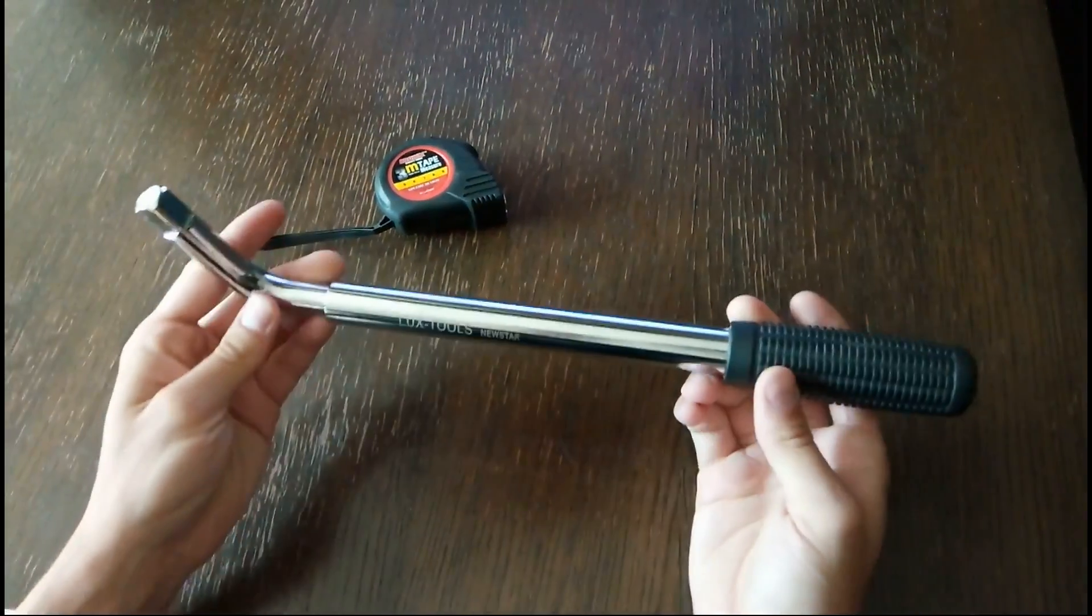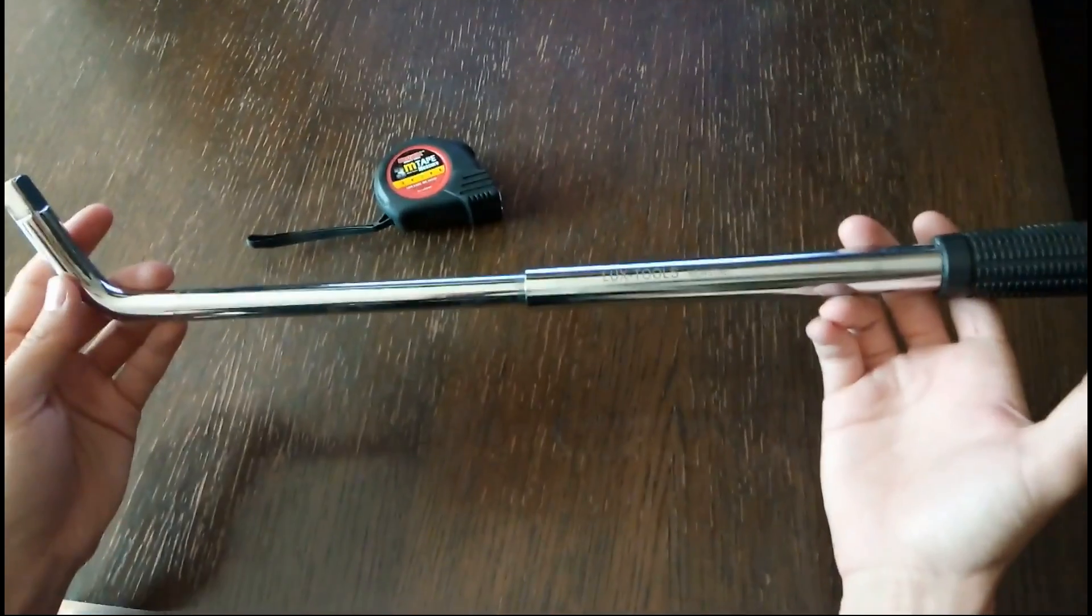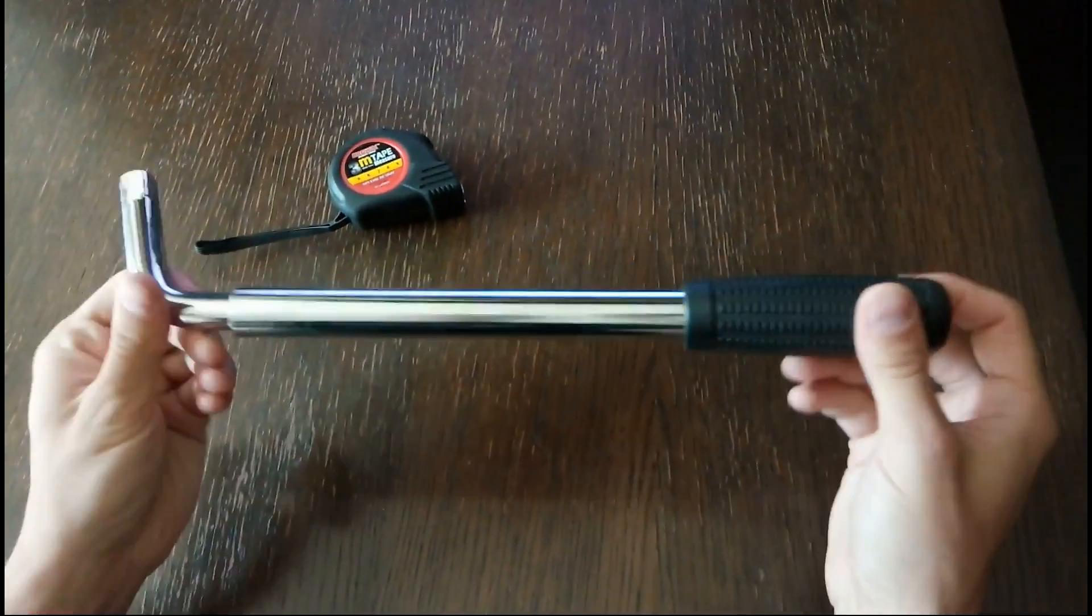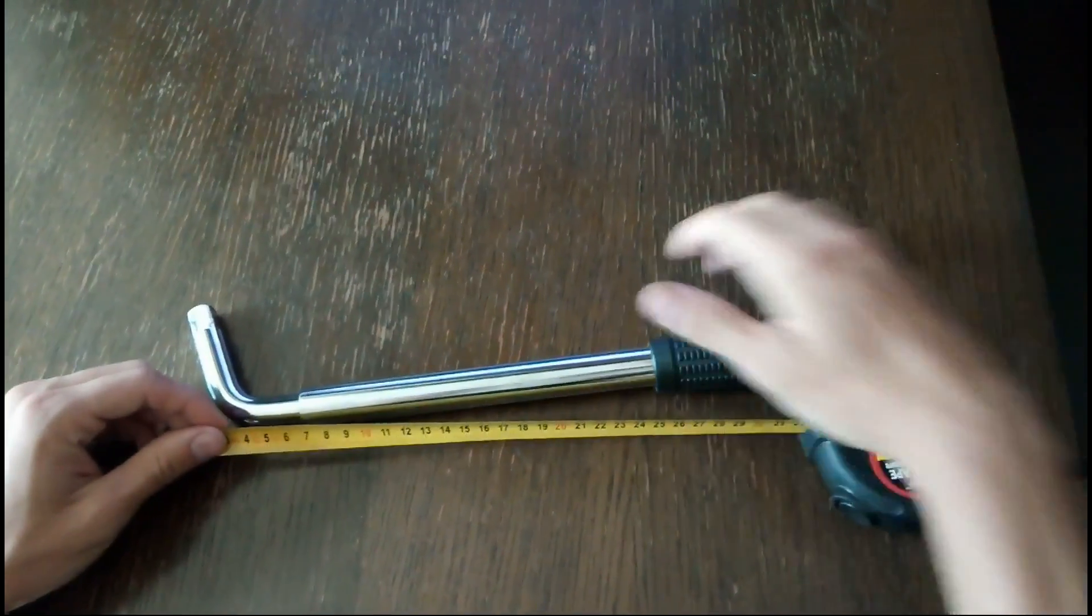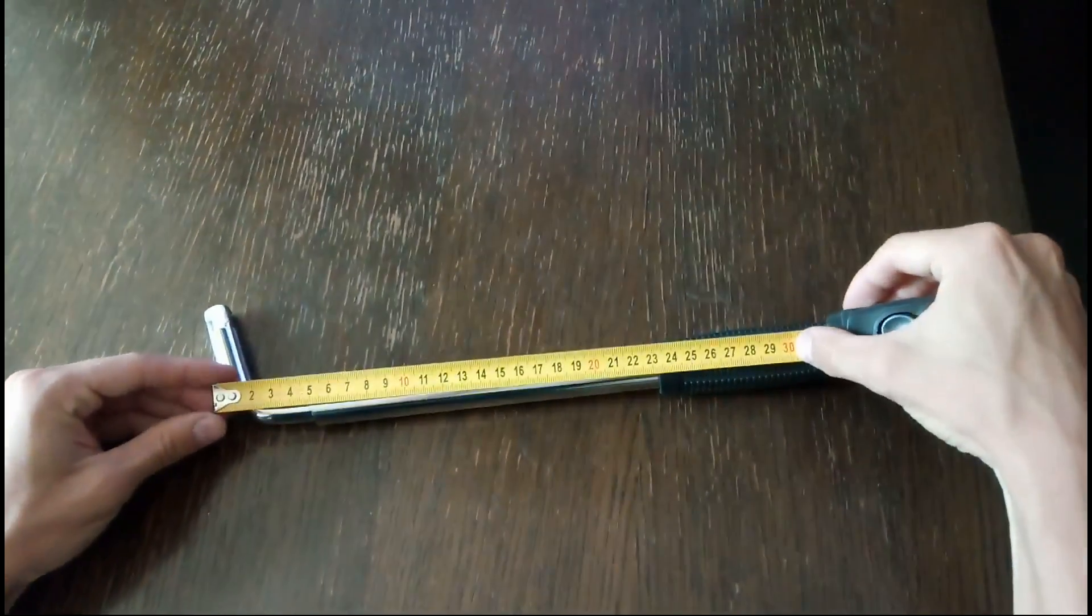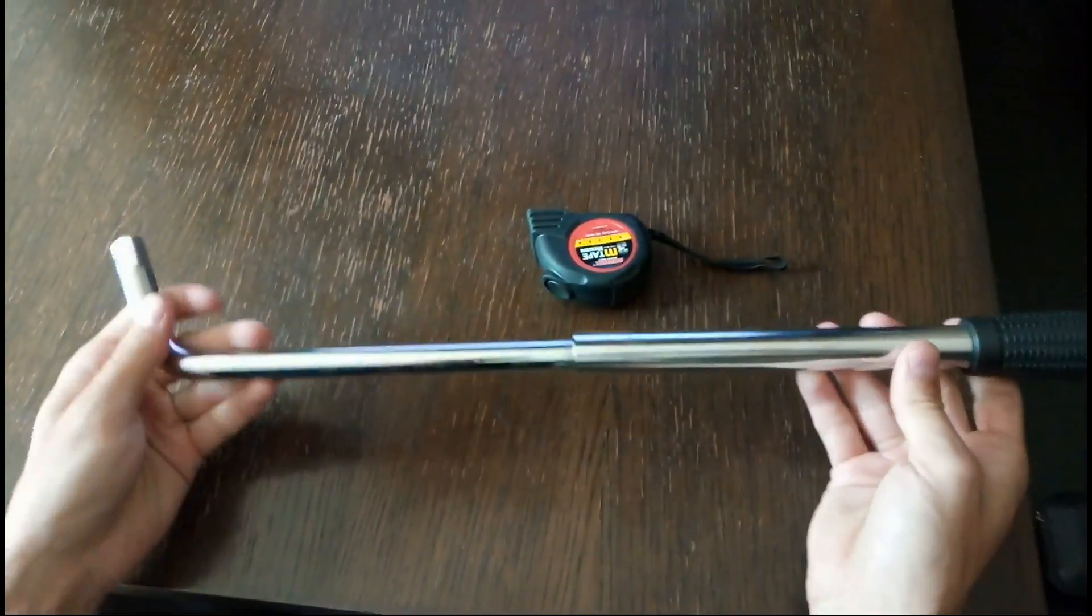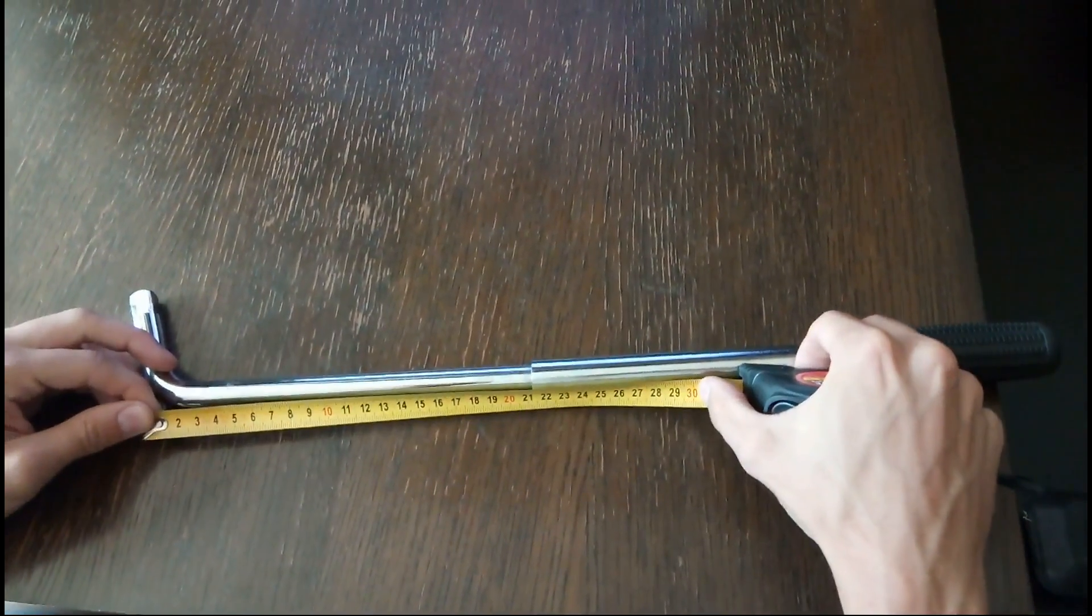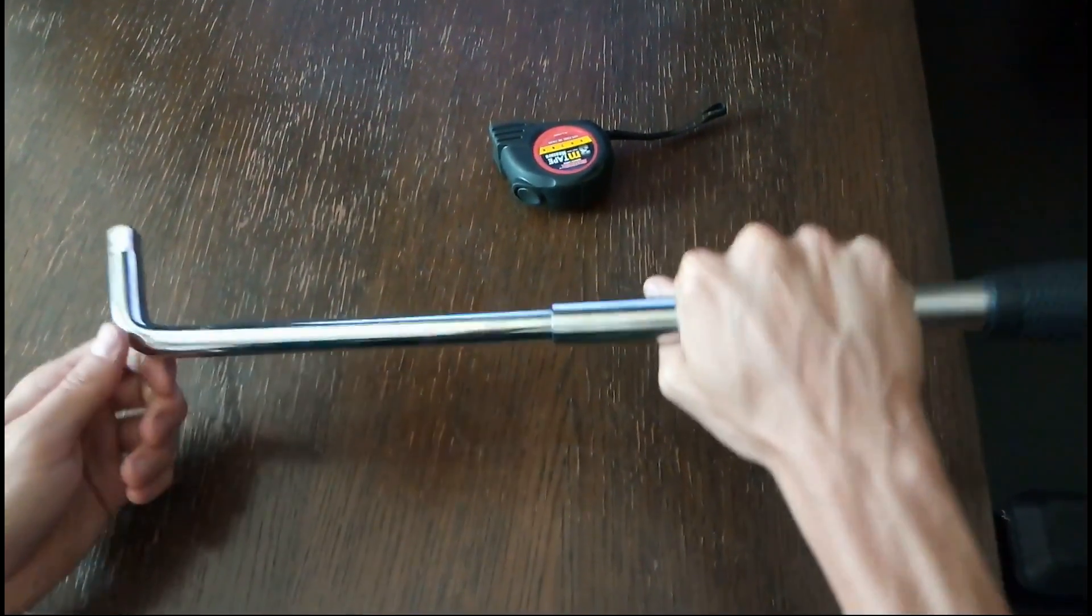I usually use this breaker bar. This actually extends. I extend it when I'm unscrewing and then I just put it together when I'm screwing down. From the axis to where you hold it should be approximately 30 centimeters. So if you have just a long breaker bar, you will measure and see where is the 30 centimeters, and then here you will just hold it here when tightening down.